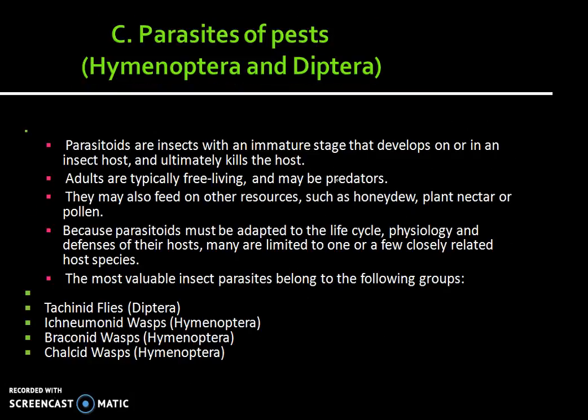The next category is parasites of pests, which includes Hymenoptera and Order Diptera. Parasitoids are insects with an immature stage that develops on or in an insect host and ultimately kills the host. Adults are typically free-living and may be predators. They may also feed on other resources such as honeydew, plant nectar, or pollen. Because parasitoids must be adapted to the life cycle, physiology, and defenses of their host, many are limited to one or a few closely related host species.